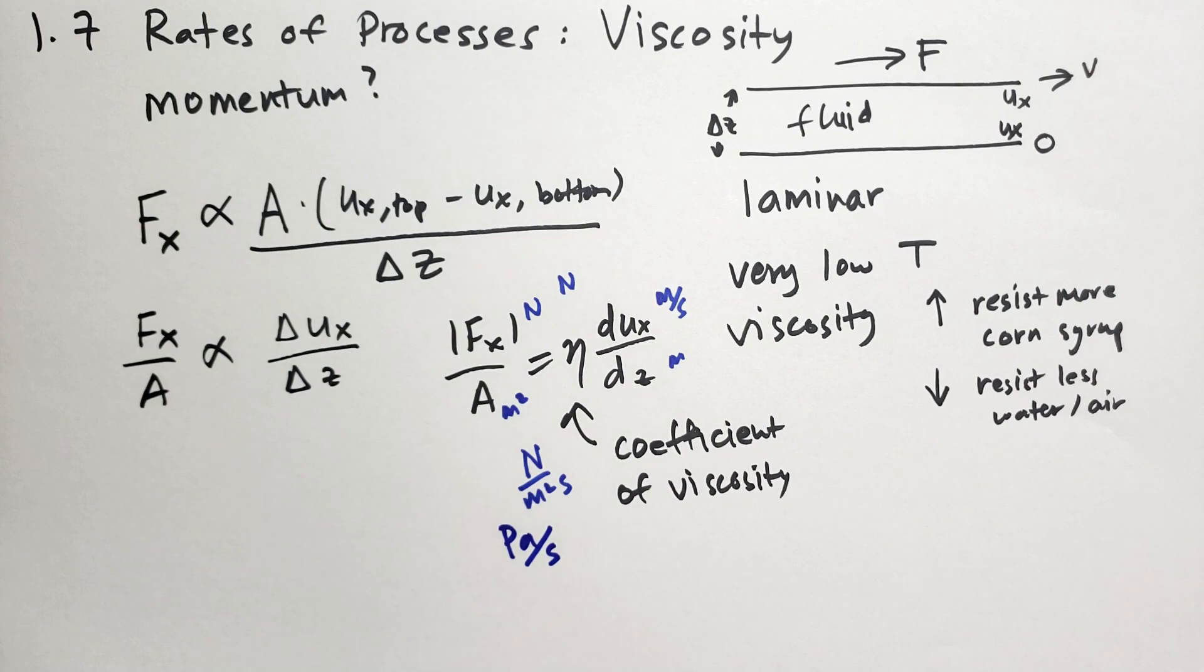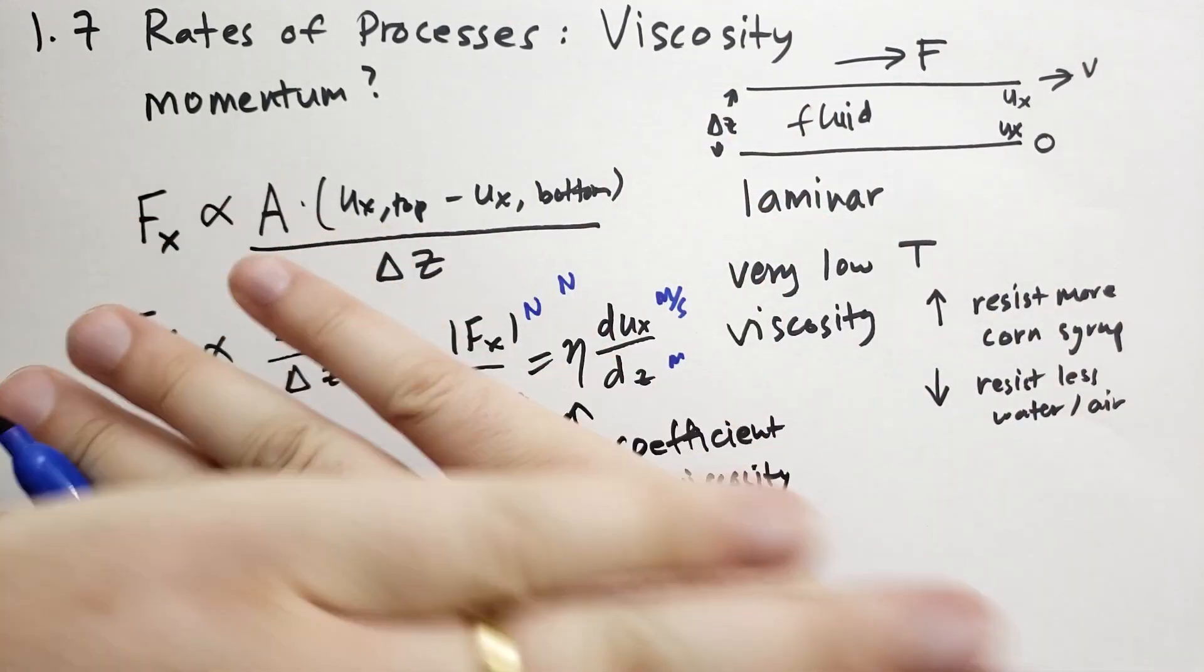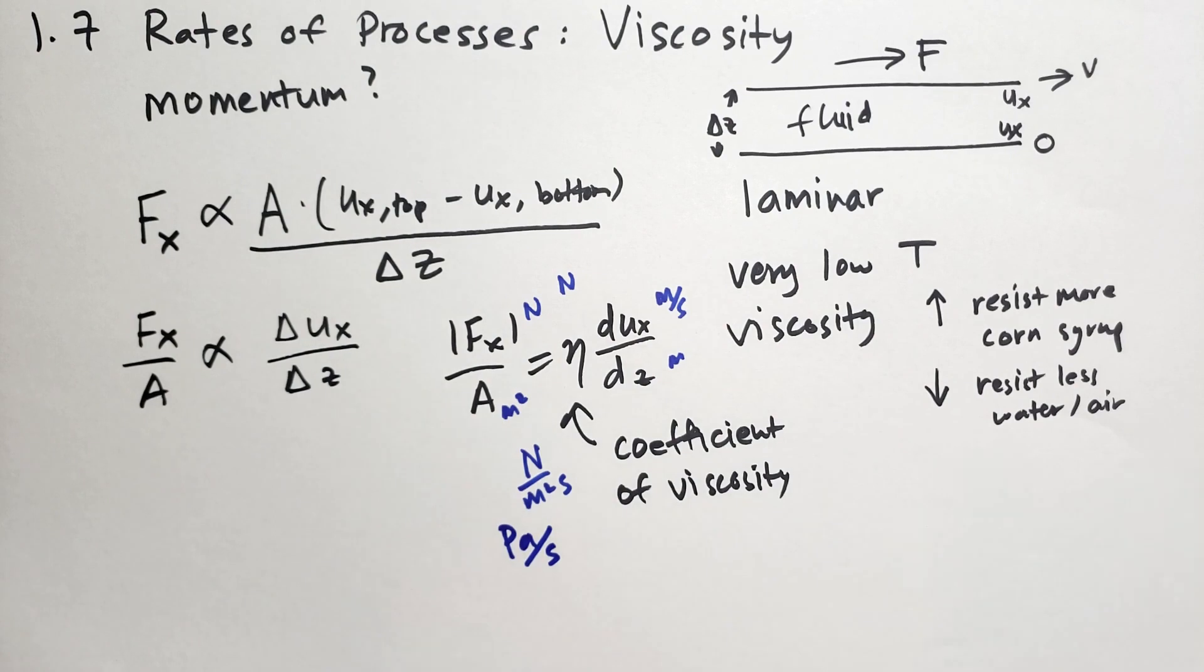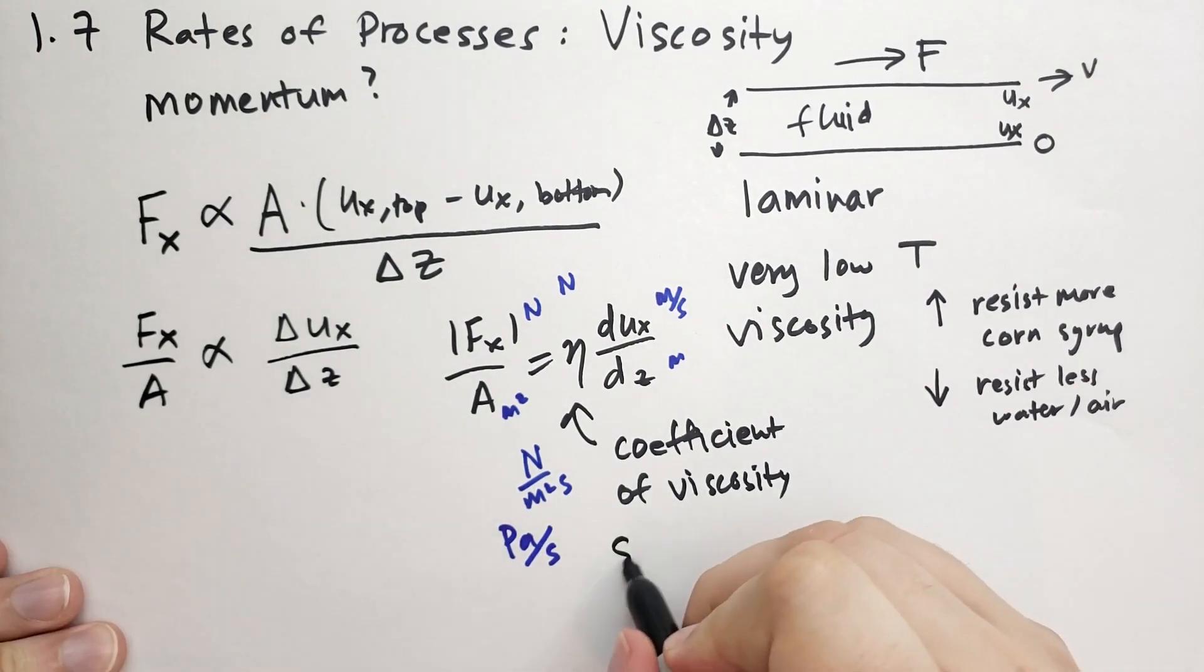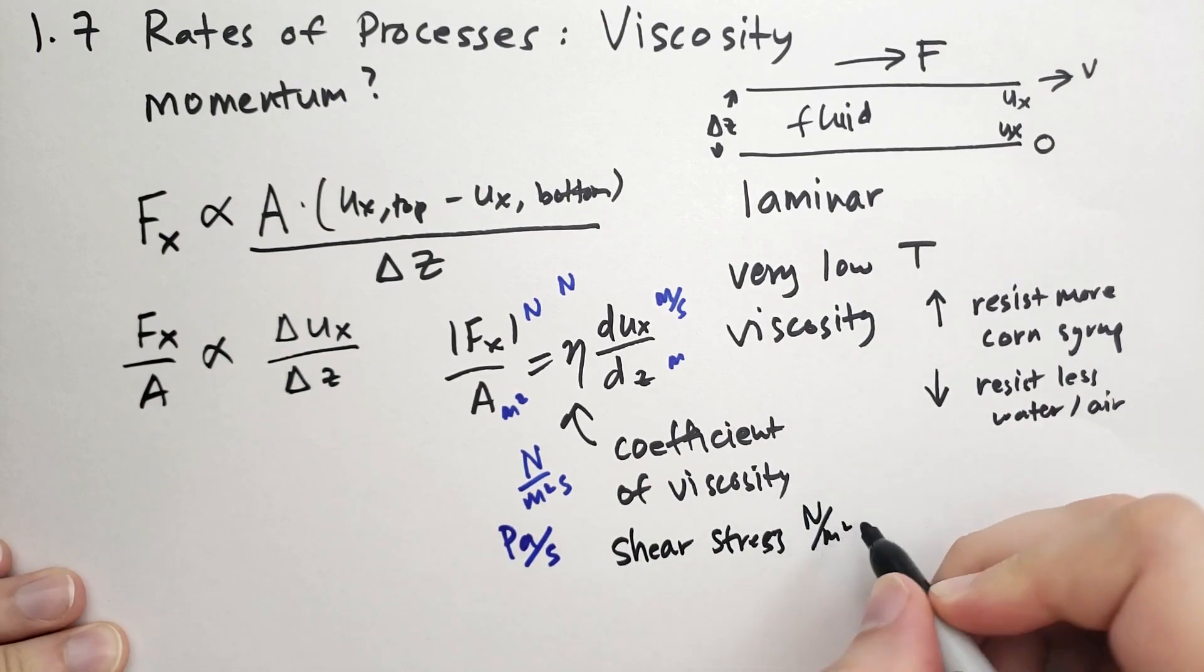Newtons per meter squared is just a pascal, so this is pascals per second. Pascal is generally associated with pressure. However, in this case this is not pressure. This is not force applied against an area, this is force applied across an area. So we call this the shear stress.